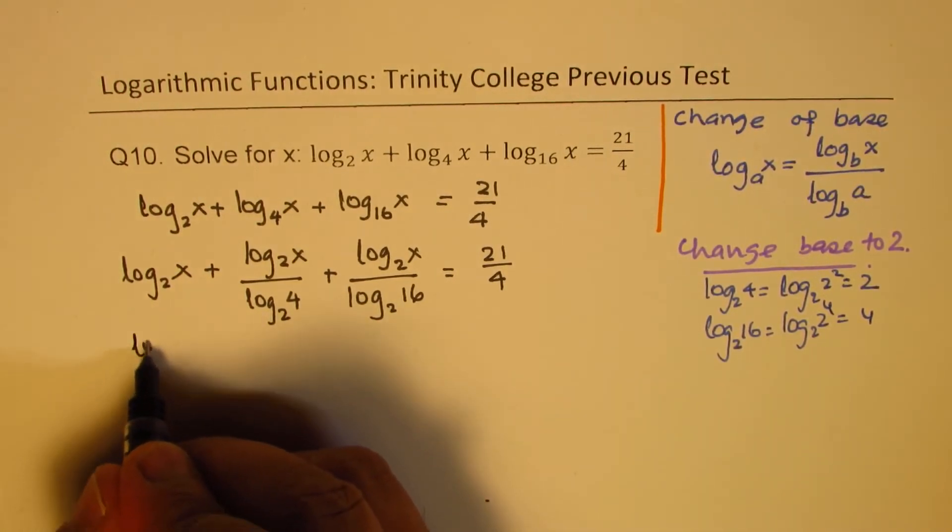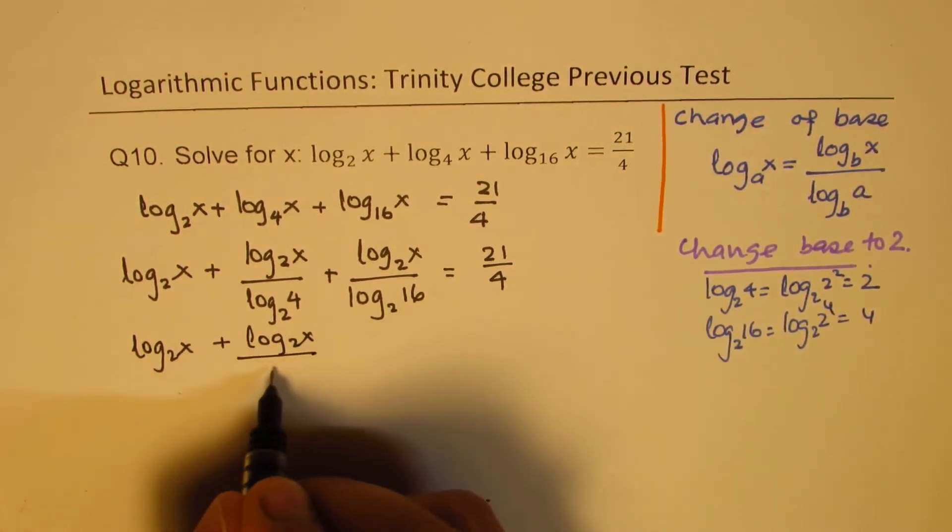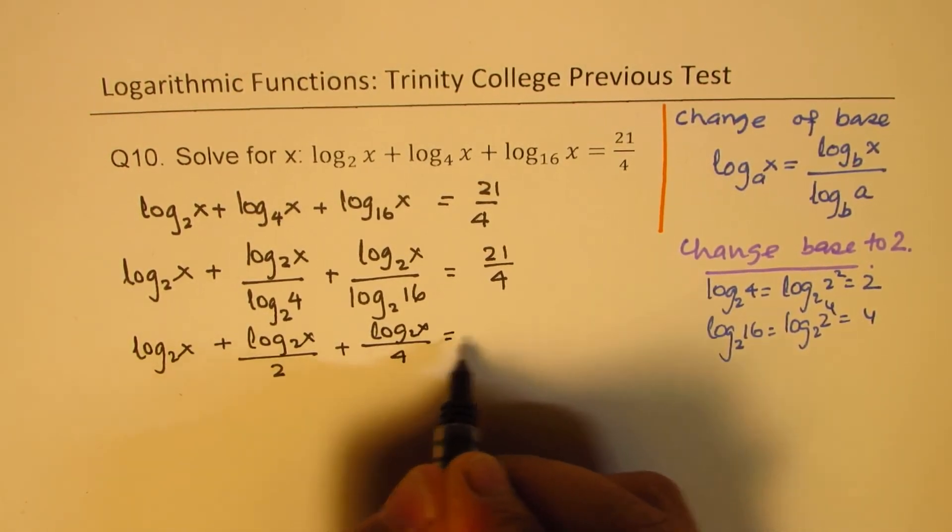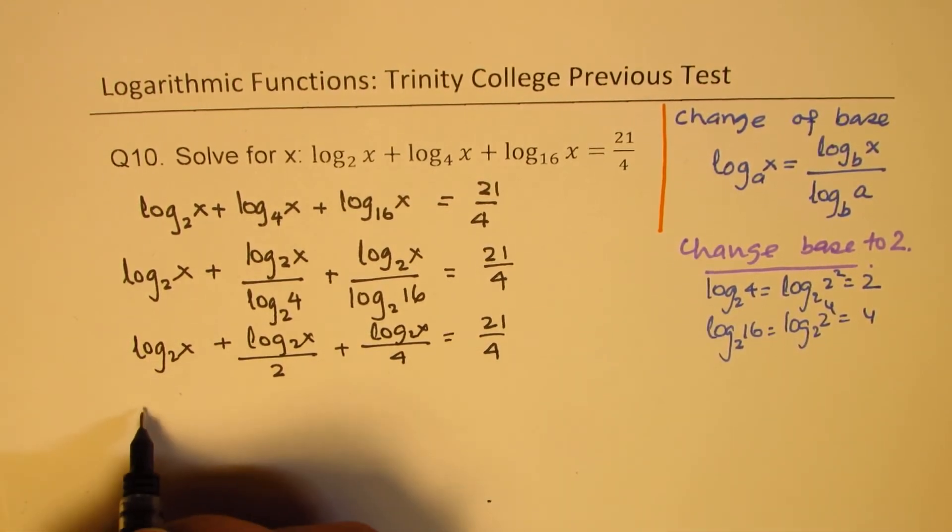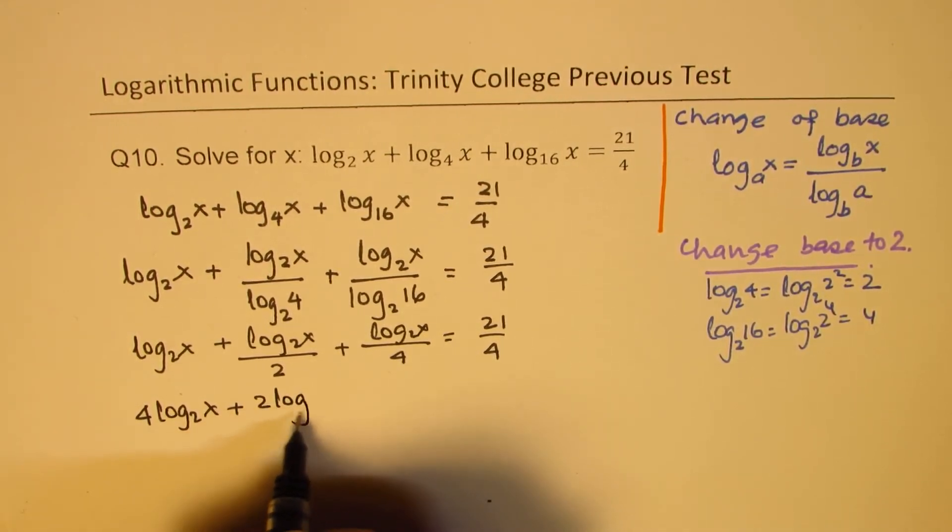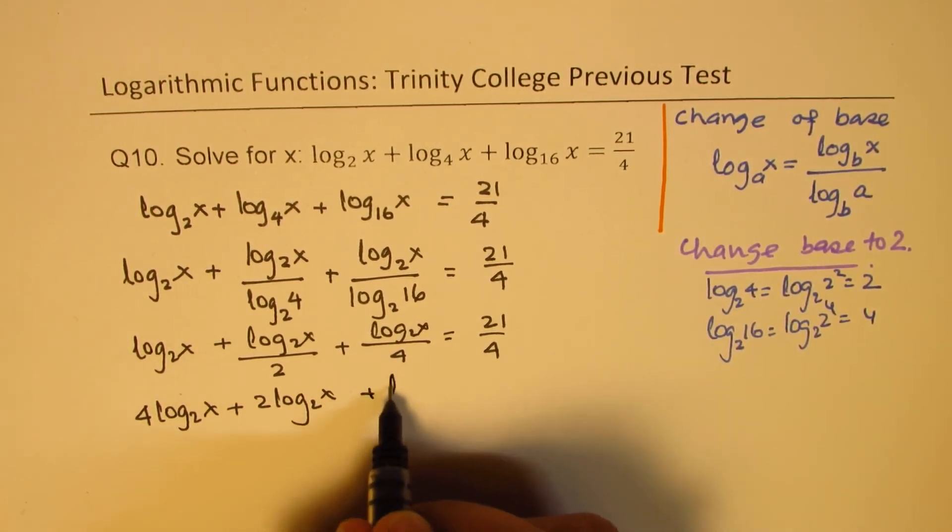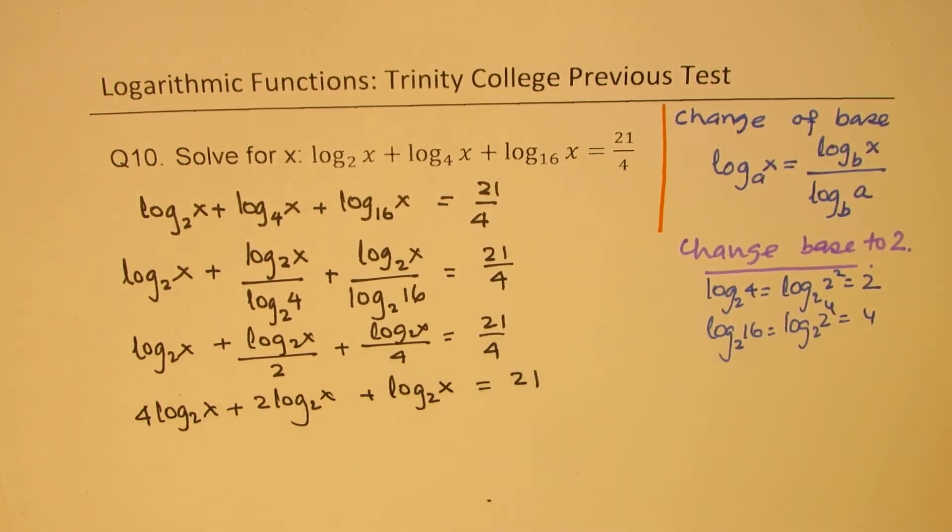And what we get here is log₂(x) + log₂(x)/2 + log₂(x)/4 = 21/4. Now let's multiply everything by 4. So we get 4log₂(x) + 2log₂(x). So 4 and 2, 2 remains. And here we get log₂(x) equals to 21 multiplying by 4, get rid of this denominator.